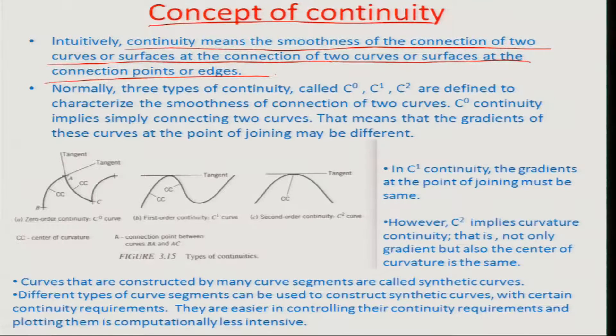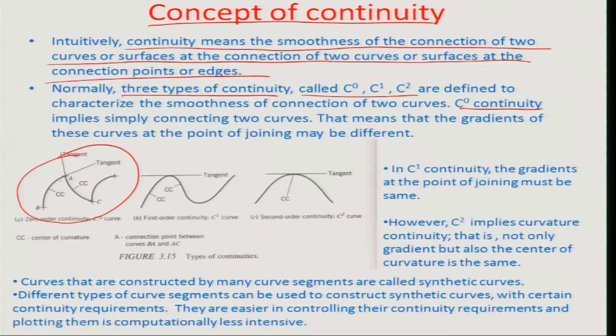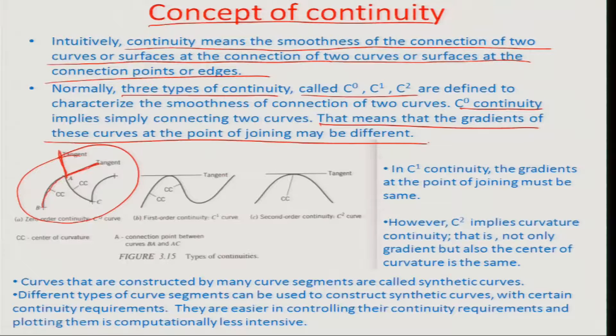Normally three types of continuities are existing, they are called C0, C1 and C2 continuity. C0 continuity as can be seen here implies simply connecting two curves, that is the two tangents of the two curves that intersects should intersect to each other at one of the points which would mean that the curves are in physical touch with each other and physically they are continuous. The gradients of these curves at the point of joining may be different, but they are essentially intersecting. That is the basis of C0 continuity.